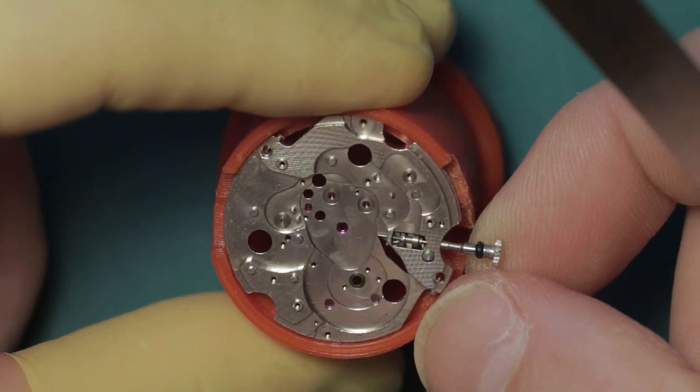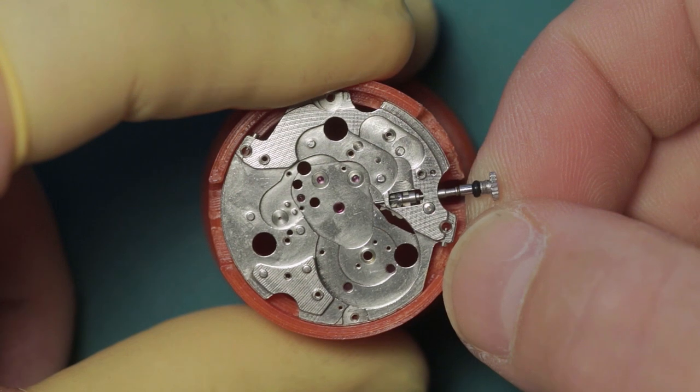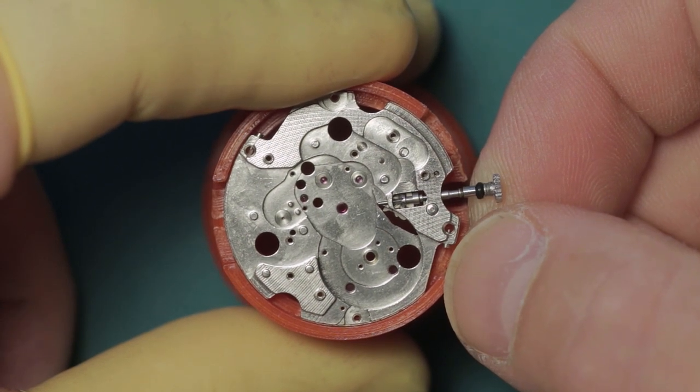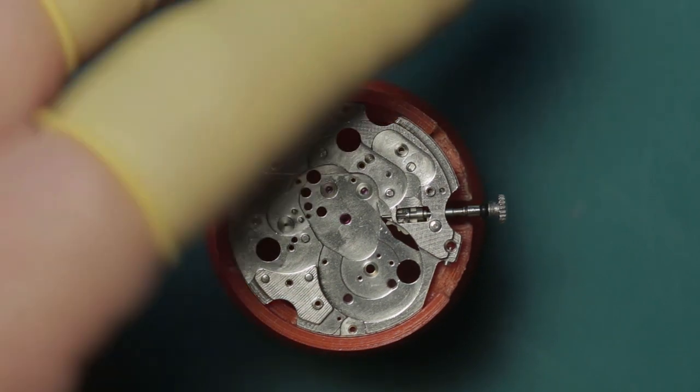And then the second wheel quite simply lifts clear like so. They will all be inspected, and the vast majority of this will go through a hand cleaning process before it goes through the cleaning machine, as I typically do. So that's the movement side completely stripped with the exception of the diafix jewels and the mainspring barrel.